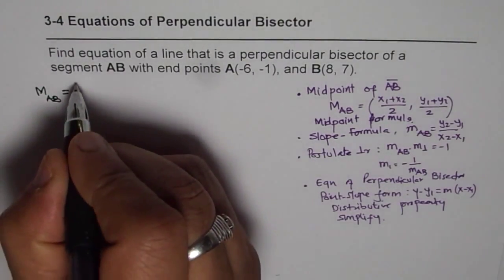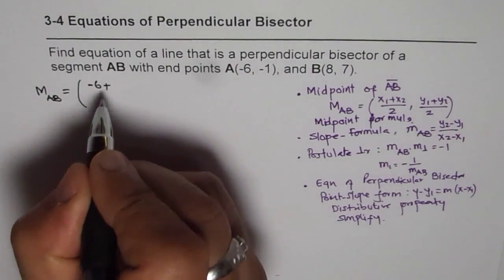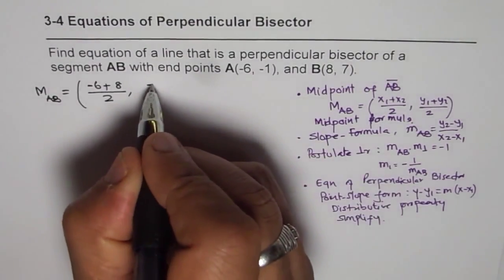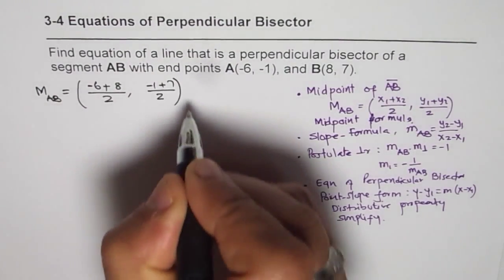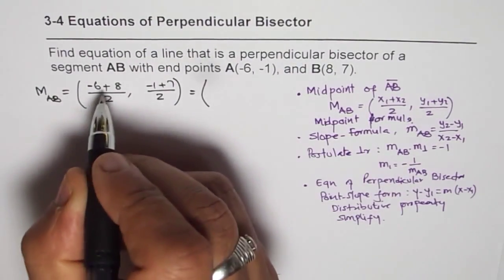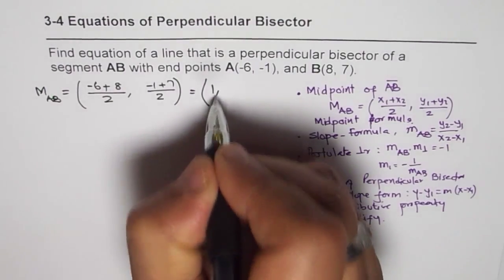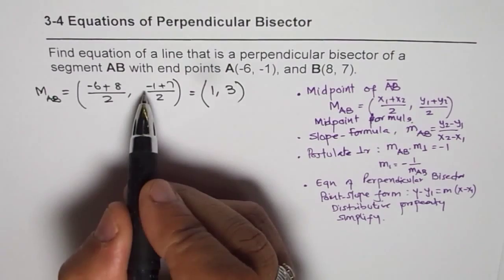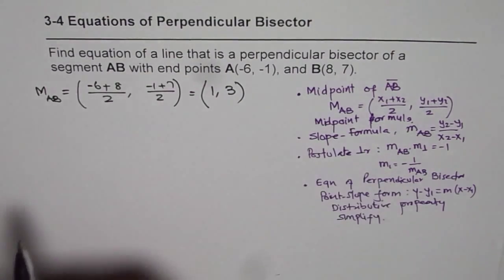The average value is (-6 + 8)/2 for x, and (-1 + 7)/2 for y. And that is equal to 2/2 is 1, and 7 minus 1 is 6, 6 divided by 2 is 3. So we get the midpoint (1, 3).